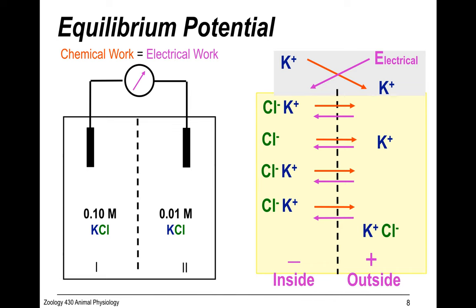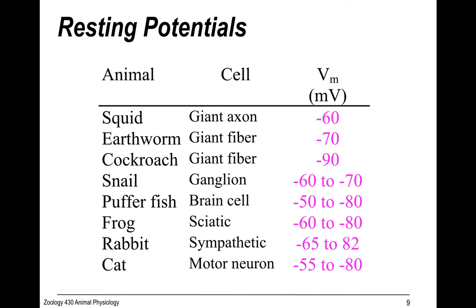So we have a negative potential inside and a positive potential outside the membrane. Surprisingly, if you look across neurons of many animals across the tree of life, they have pretty much the same voltage difference — the resting potential is roughly on the order of negative 60 to negative 65 millivolts.